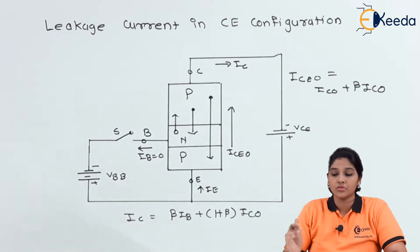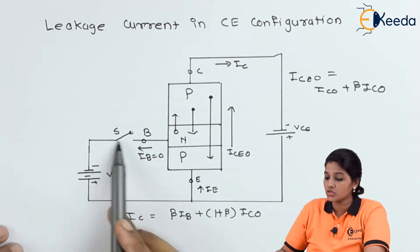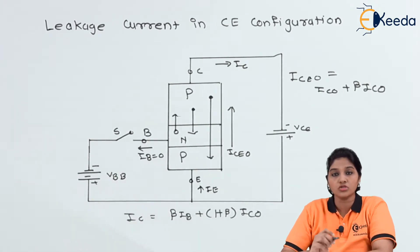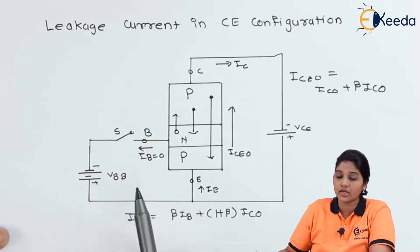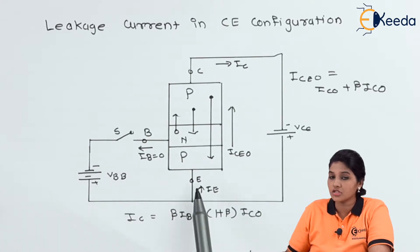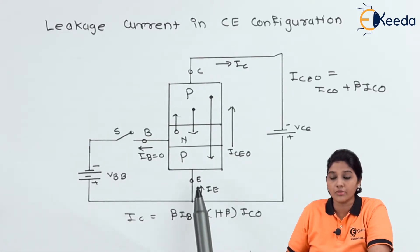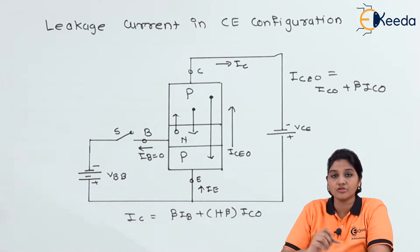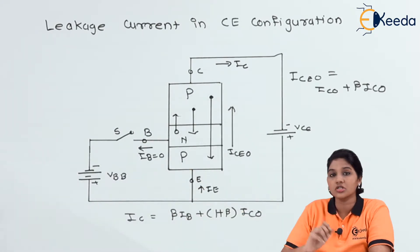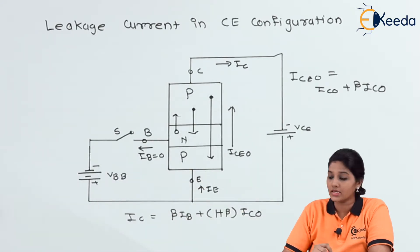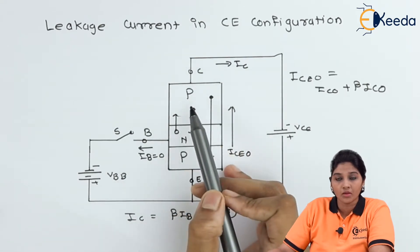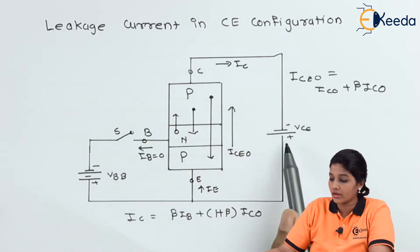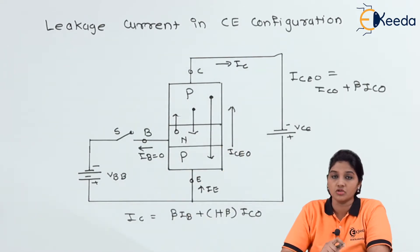Under normal operation, that means when switch S is closed, the emitter-base junction is forward biased by connecting the positive terminal of the battery to the emitter and the negative terminal to the base. The collector-emitter junction is reverse biased by applying the negative terminal to the P region and the positive terminal to the emitter region.